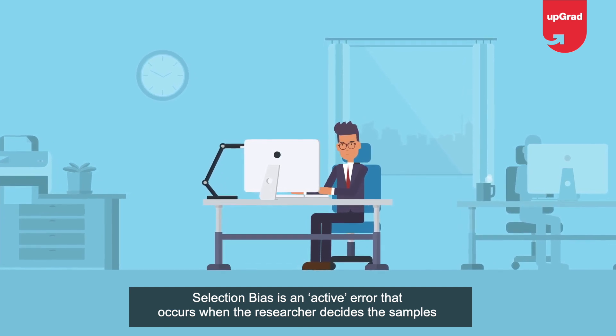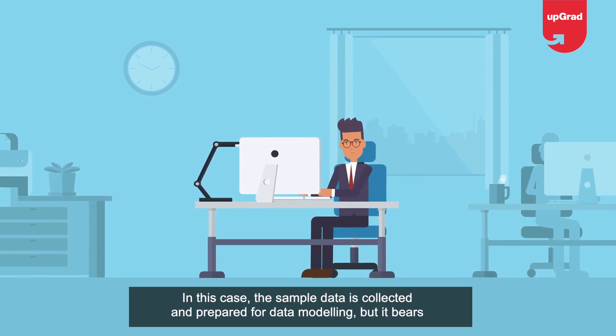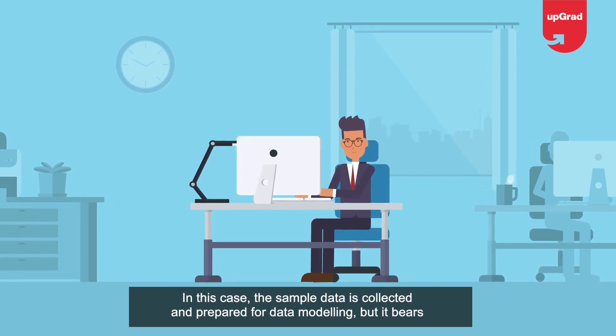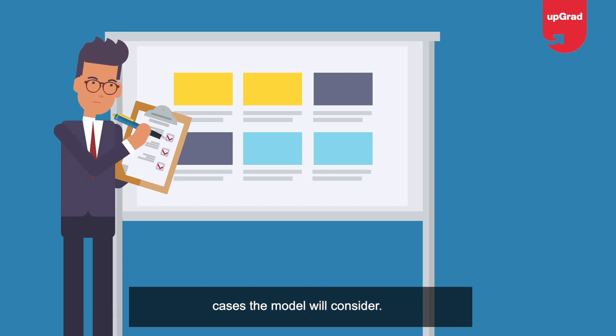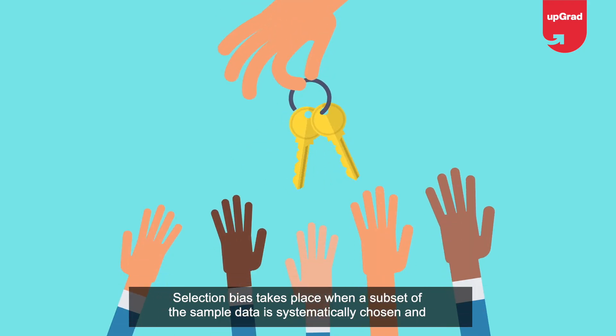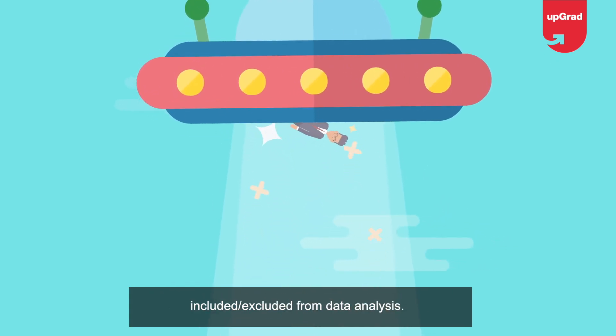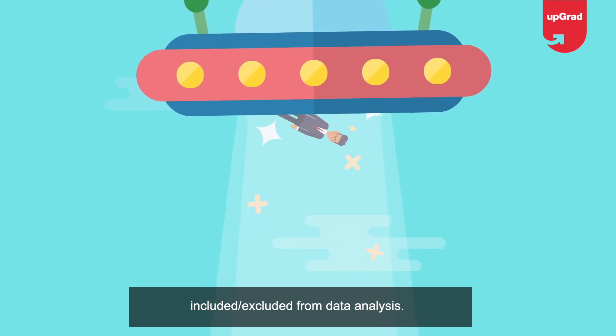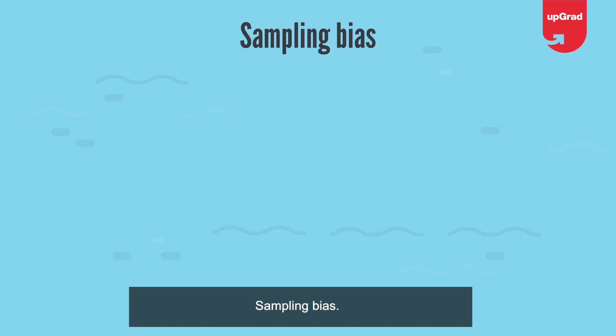Question 7: What is selection bias? Selection bias is an active error that occurs when the researcher decides which samples are going to be studied. In this case, the sample data is collected and prepared for data modeling, but it bears characteristics that are not true representatives of the future population of cases the model will consider. Selection bias takes place when a subset of sample data is systematically chosen and included or excluded from data analysis.